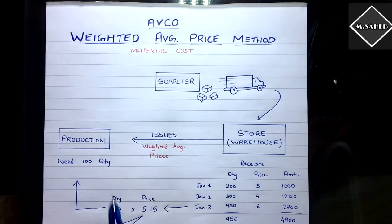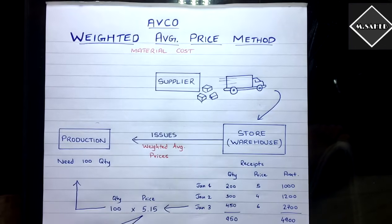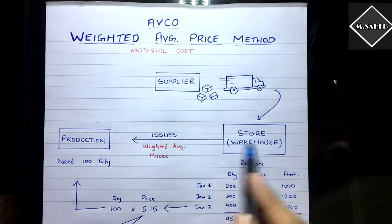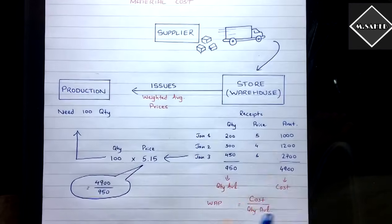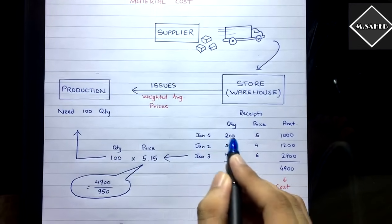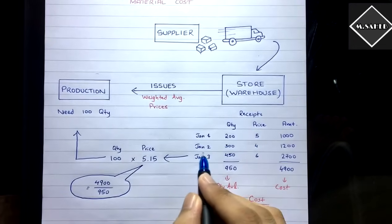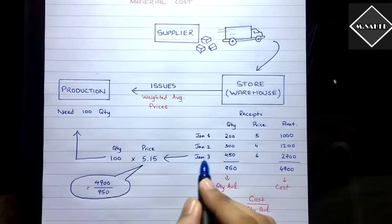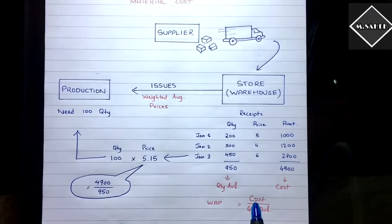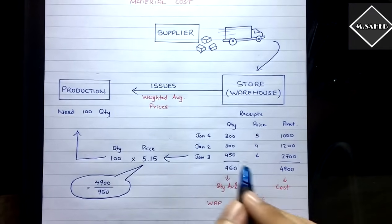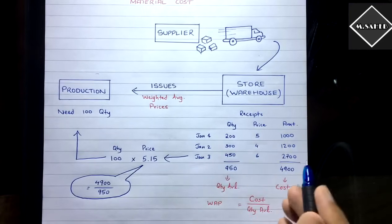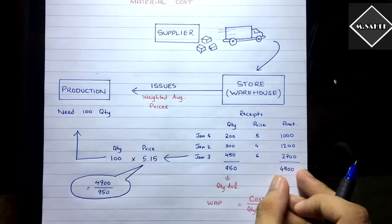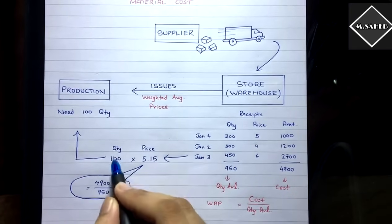Let's say the production department needs 100 units of raw materials and requests them from the warehouse. You have receipts: 4th January — 200 quantity at price 5; January 2nd — 300 quantity at price 4; January 3rd — 450 quantity at price 6. So how do you calculate the weighted average price to issue those 100 units?